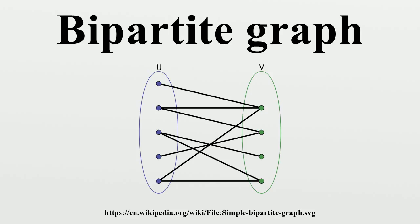If |U| = |V|, that is, if the two subsets have equal cardinality, then G is called a balanced bipartite graph. If all vertices on the same side of the bipartition have the same degree, then G is called biregular.